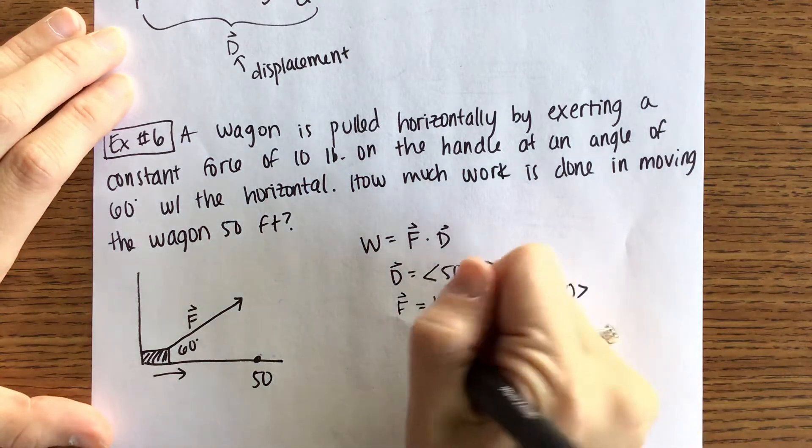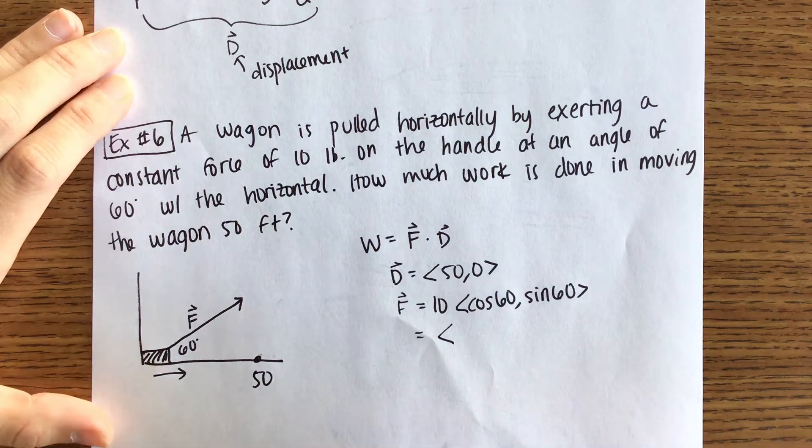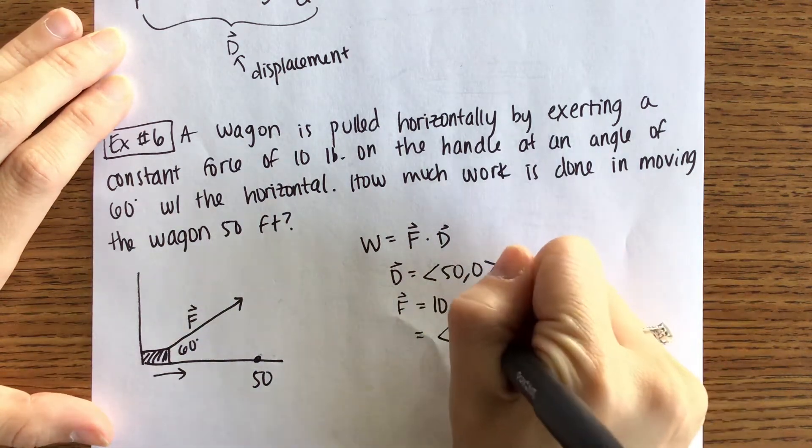Okay. Cosine of 60. One half. Multiplied by that 10 gives us 5. And then we find root 3.